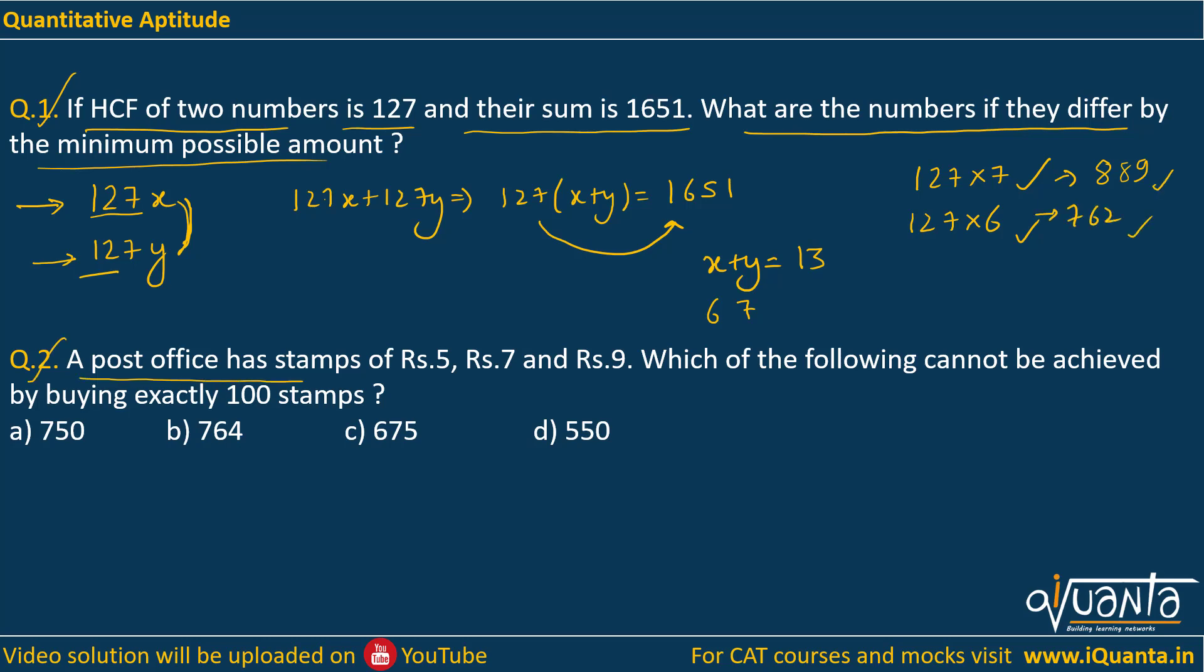A post office has stamps of rupees 5, 7, and 9. Which of the following cannot be achieved by buying exactly 100 stamps? Now here we can solve this question within seconds. We can see here that rupees 5 is odd, 7 is also odd, and 9 is also odd, and we have to buy exactly 100 stamps.